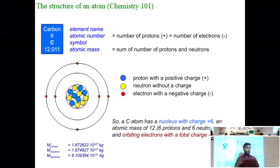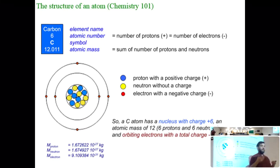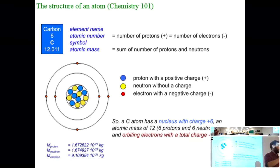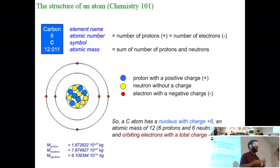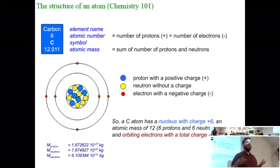Carbon is not happy, so it's going to bond. That's what drives all elemental bonding — atoms bond so they can get a full, complete outermost shell. That's what makes atoms stable and happy.